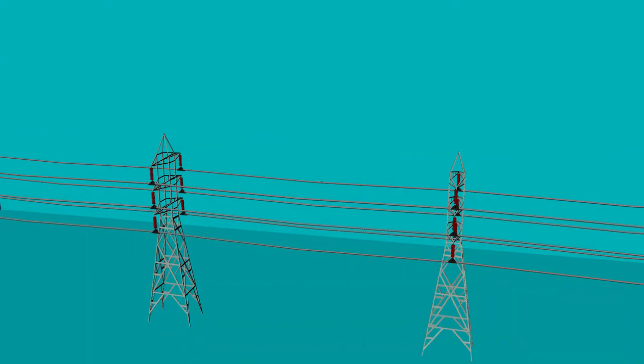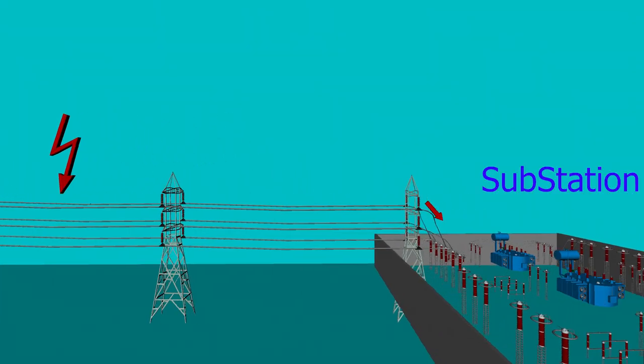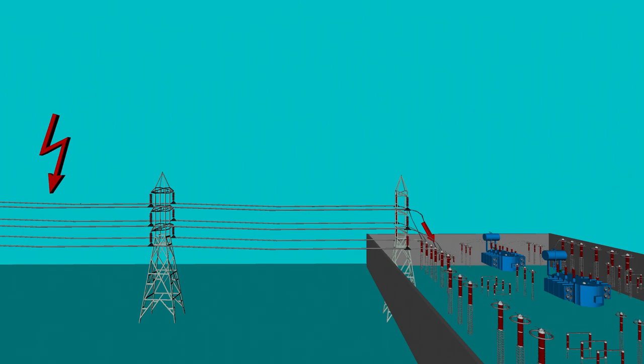In absence of earth wire, if a lightning stroke hits the high voltage power lines directly, high fault currents will travel through the power lines all the way to the substation from where these lines are emanating.